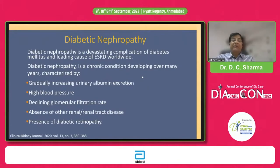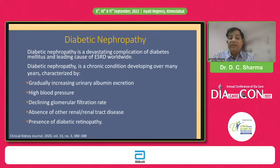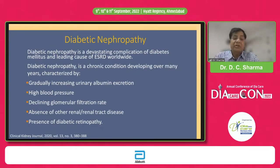Dear friends, it is a well-known fact that diabetic nephropathy, a leading microvascular complication of diabetes, is a devastating complication leading to a lot of morbidity and is one of the important causes of end-stage renal disease worldwide. Diabetic nephropathy is a chronic condition developing over many years, characterized by a typical clinical course with gradually increasing urinary albumin excretion accompanied by rising blood pressure and a decline in GFR.